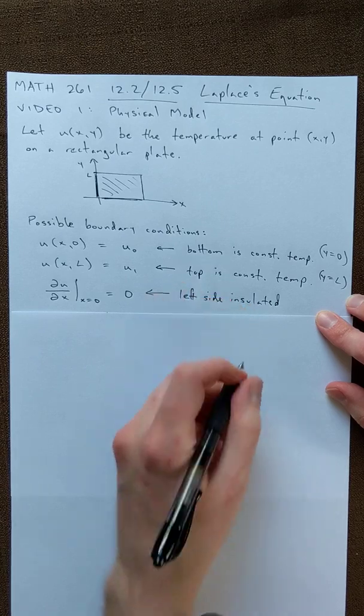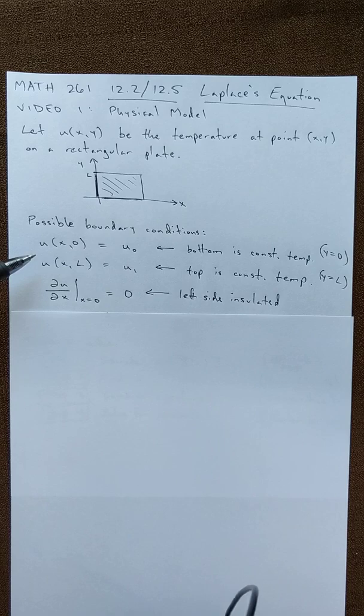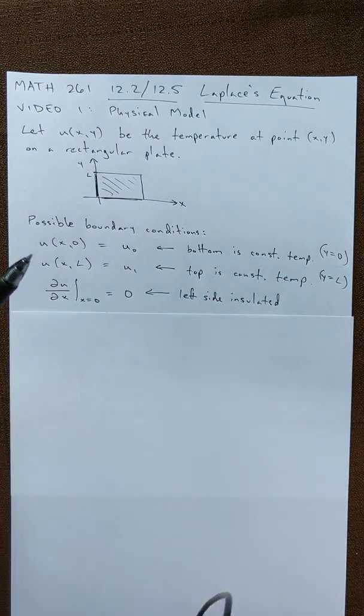So if our derivative is zero to a place, that means it's insulated. If the function is a constant, that means that it's being held at a constant temperature.